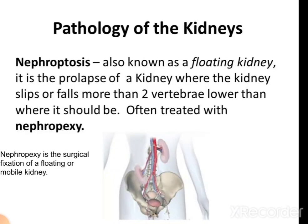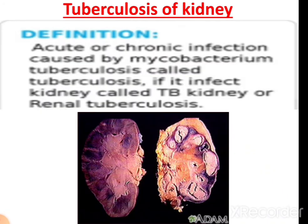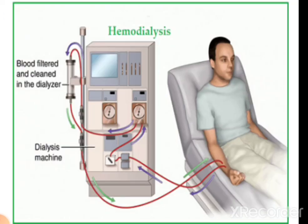Nephroptosis, also known as floating kidney, is the prolapse of the kidney where the kidney slips or falls more than two vertebrae lower than its normal position. It is often treated with nephropexy, which is the surgical fixation of the floating or mobile kidney. Other pathologies include renal stones, tuberculosis of the kidney due to Mycobacterium tuberculosis infection, and hemodialysis — a procedure where blood is filtered using an electronic machine in cases of severe renal failure.